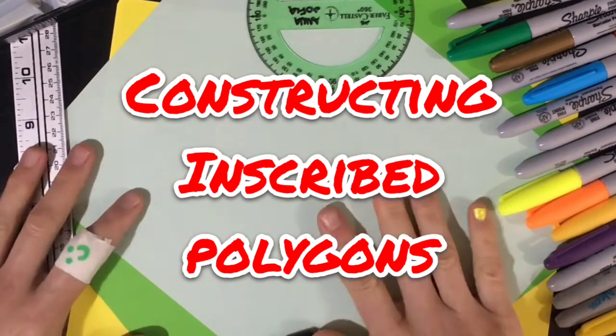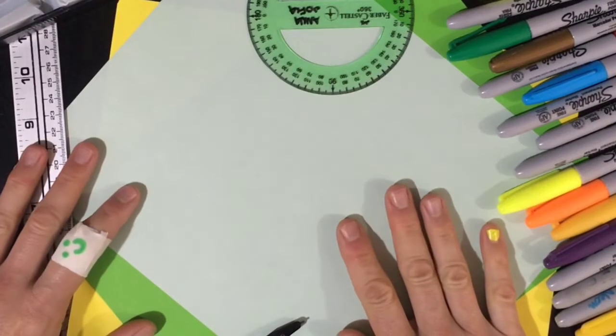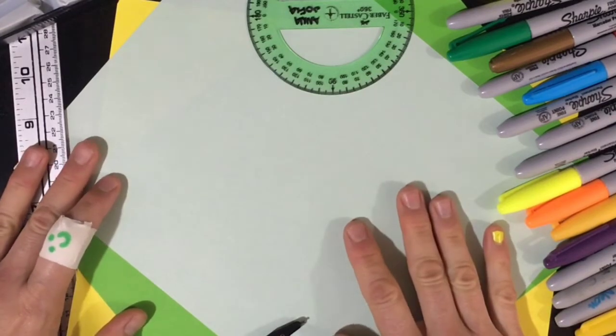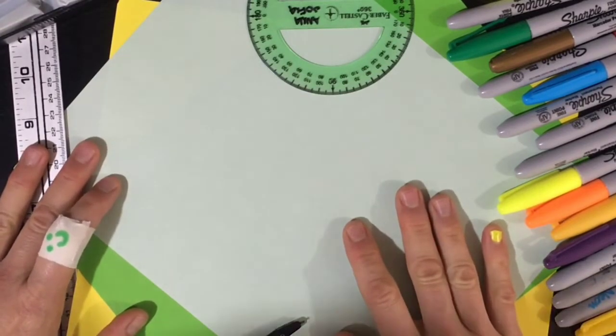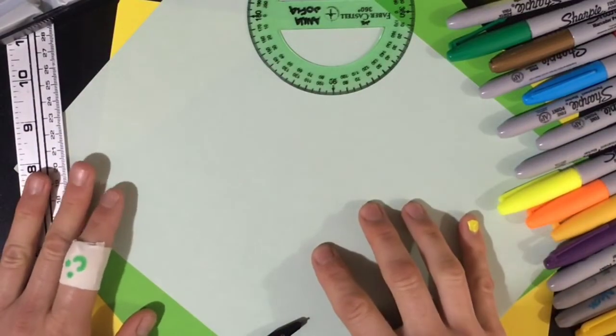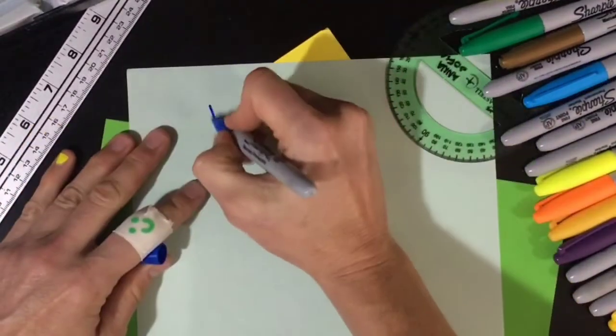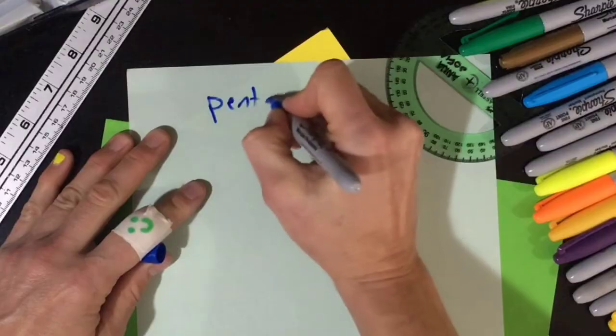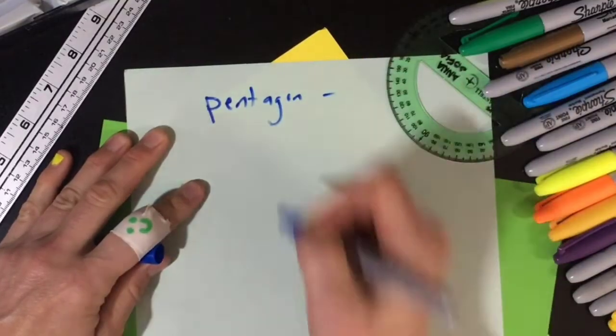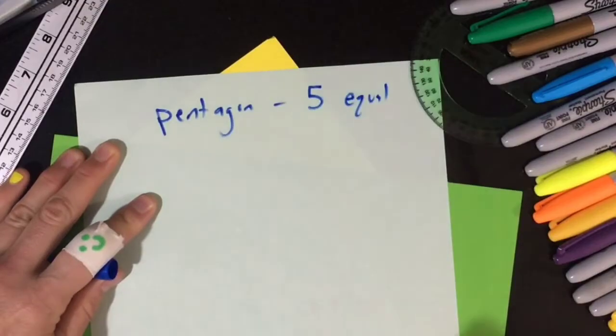What's up guys, so today I'm going to be showing you how to draw any regular polygon inside of a circle, or inscribe a polygon in a circle. So what type of polygon do you want to make? Let's start with one of my favorites, let's do the pentagon. So the pentagon has five sides, has five equal sides.